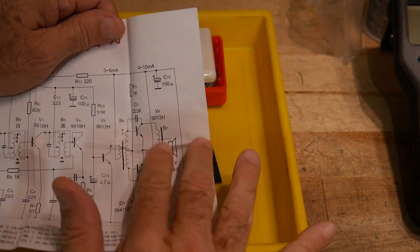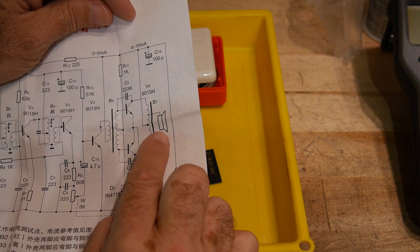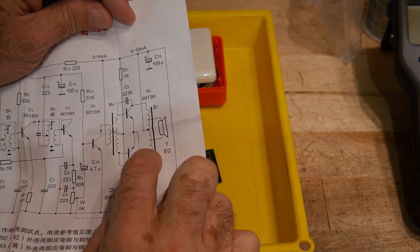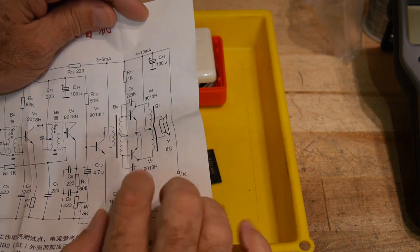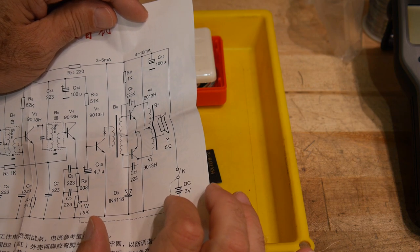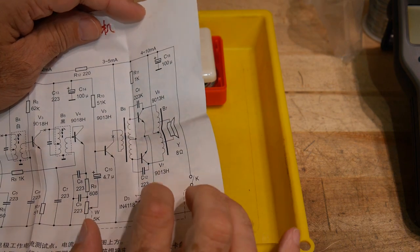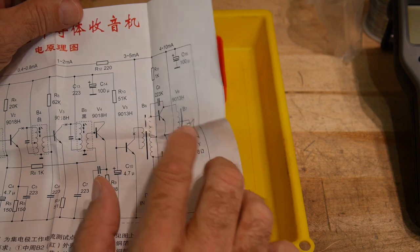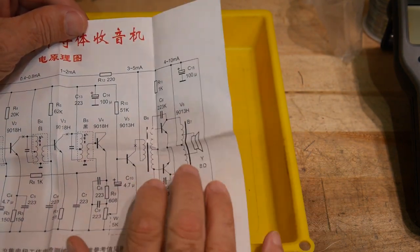So it's easy to start from the back. We have an eight ohm speaker and it's being driven with a transformer, a push pull class B amplifier, and it's being driven with a transformer and there's a driver transistor here. So three transistors are just for the amplifier for the speaker.